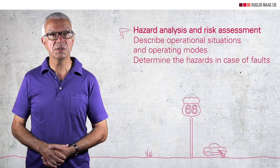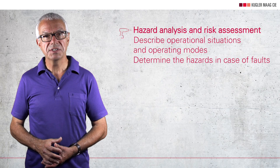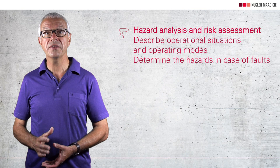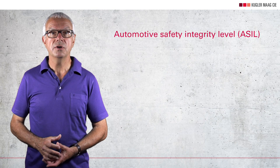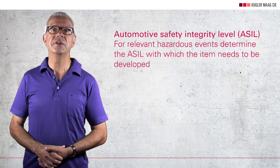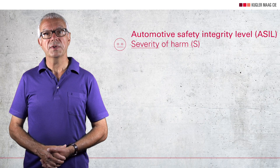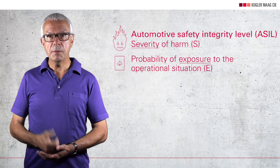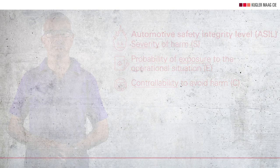For instance, a lane keeping assist system could accidentally steer the vehicle onto the other side of the road. The Automotive Safety Integrity Level, or ASIL, is then determined for the relevant hazardous events. This ASIL has a significant influence on the development activities and the product. To do this, you determine: first, the severity of harm; second, the probability of exposure to the operational situation; and third, the controllability or ability to avoid harm. Once you've done that, you determine the ASIL using this table here.